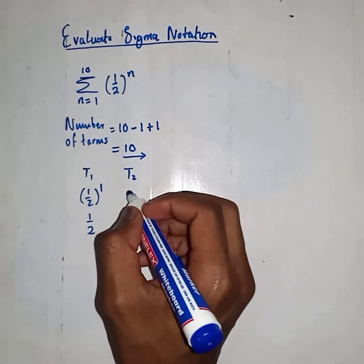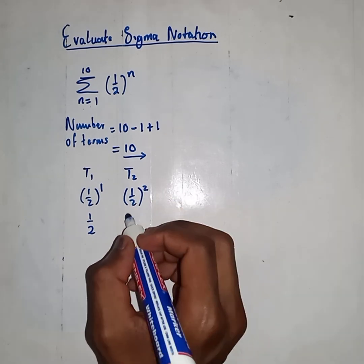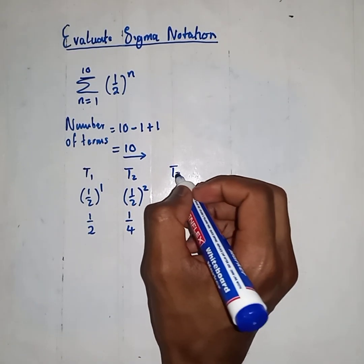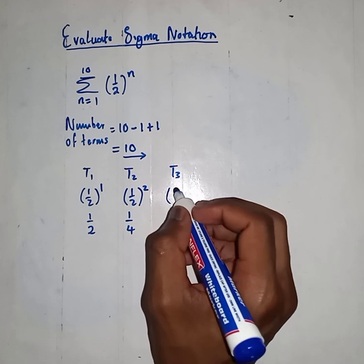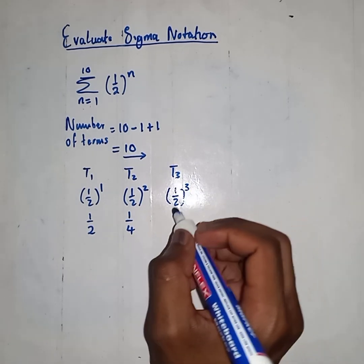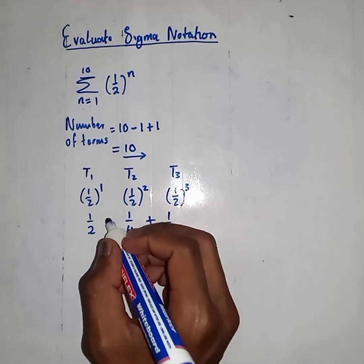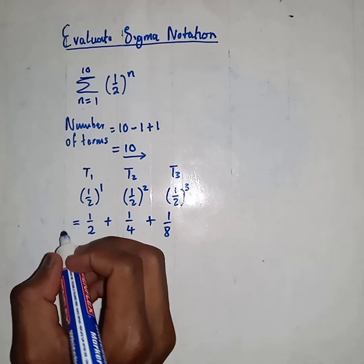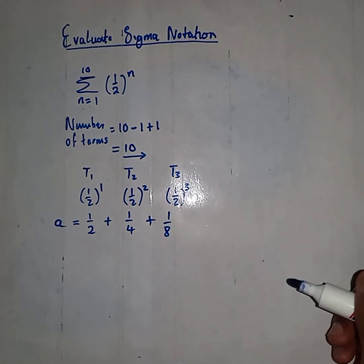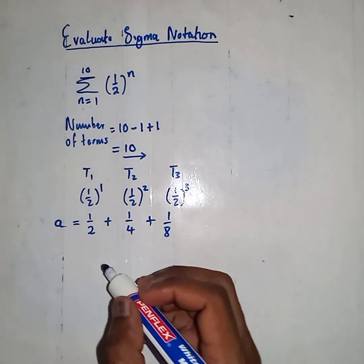For term 2, plug in n=2: you get 1/4. Then for term 3, plug in n=3: you get 1/8. This is much simpler. So this is our A value, which is 1/2.